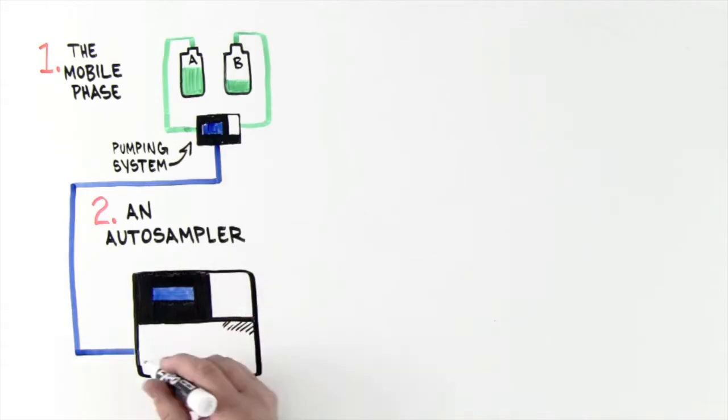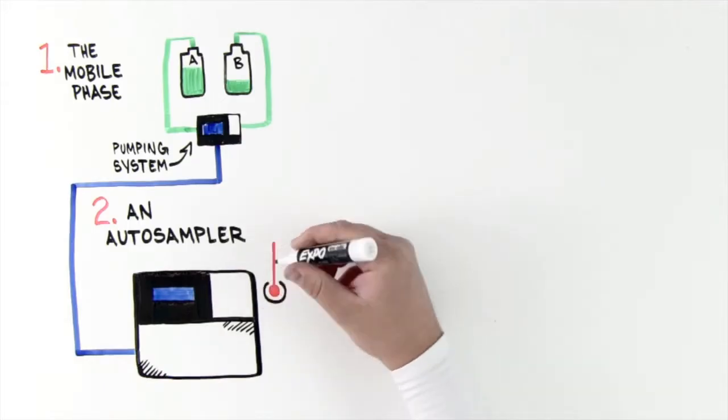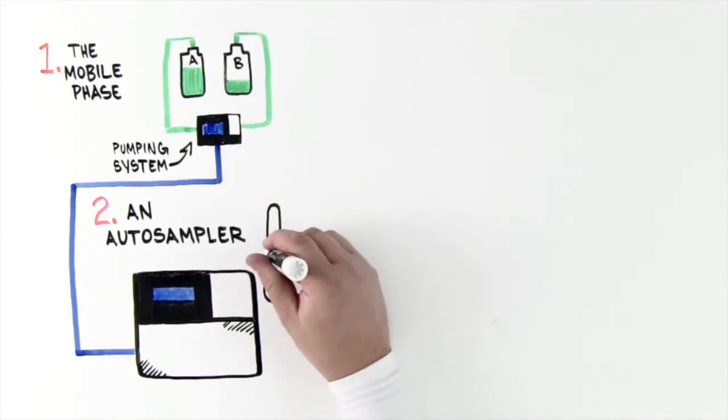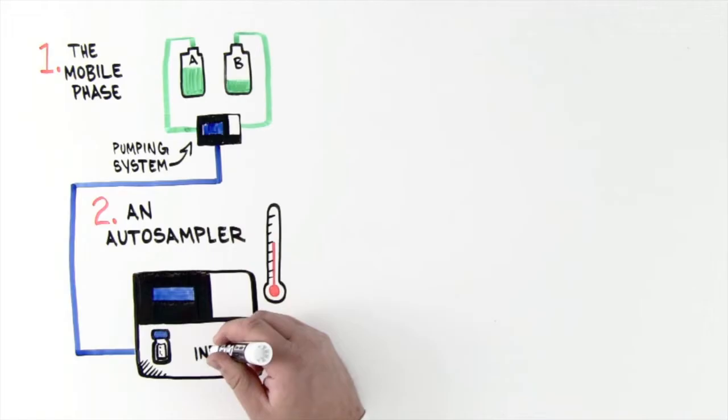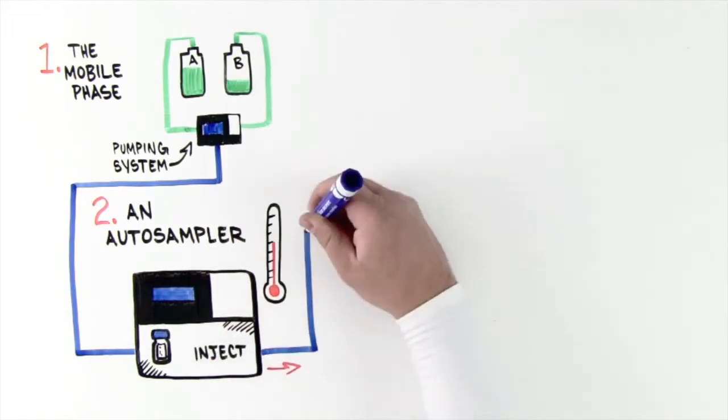When a separation needs to be performed, the autosampler switches the valve to fill the sample loop with the sample for analysis, then switches back to inject the sample. An autosampler allows the user to perform multiple sequences of runs unattended.